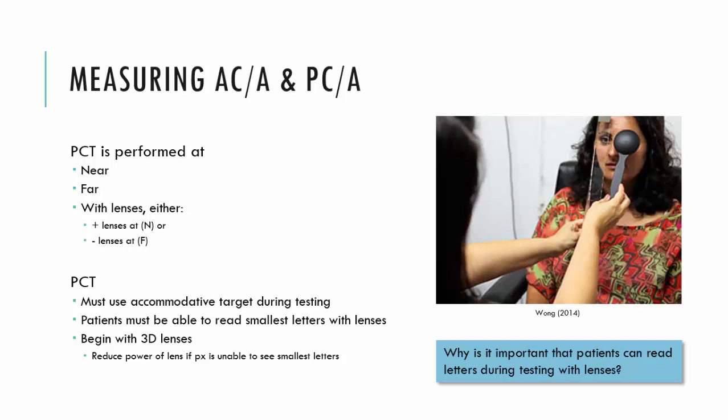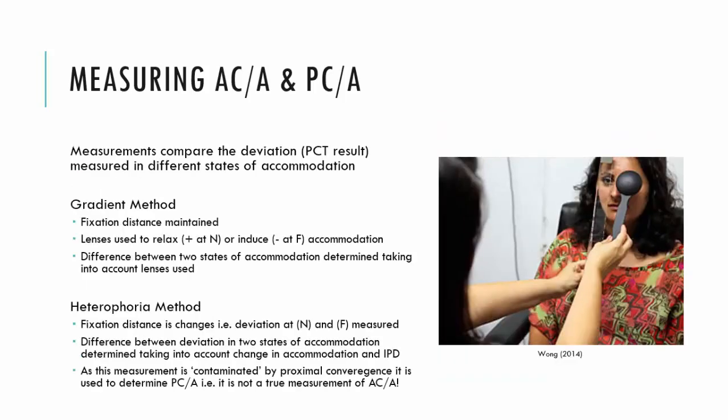This is really important because with the formulas for the ACA and PCR ratio, we're dividing by the amount of accommodation the patient is doing. If I've underestimated or overestimated the amount of accommodation, my calculation will be contaminated. There are two methods for calculating the ACA: the gradient method and the heterophoria method. The gradient method gives us the ACA ratio, and we perform the heterophoria method to then calculate the PCR ratio.